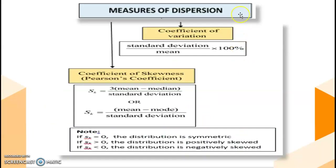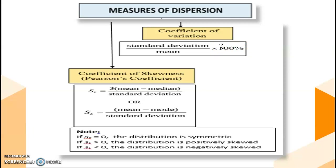For the measure of dispersion, we have two coefficients. The first one, we have the Pearson coefficient of skewedness. The second one, we have the coefficient of variation. We are going to interpret the data based on the value from each coefficient.